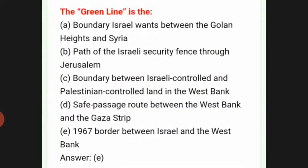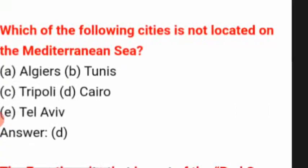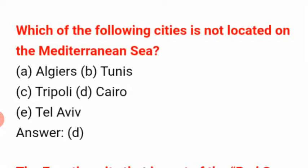The Green Line is answer E: the 1967 border between Israel and the West Bank. Which of the following cities is not located on the Mediterranean Sea? The answer is D: Cairo.